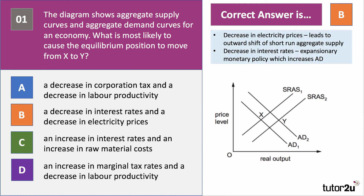Here's an explanation of the answer. A decrease in electricity prices causes a falling cost and outward shift of supply. A decrease in interest rates causes an increase in AD.